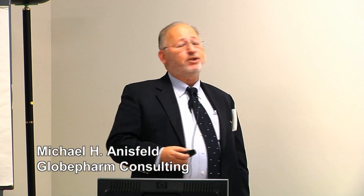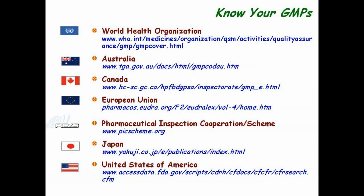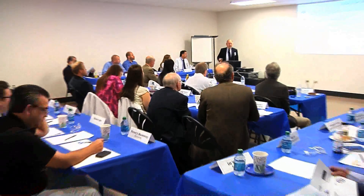Some global GMP thoughts for you. I've thrown out a lot of references — those are the websites where you can get them. They're all in English and they're all free, except for Japan where the official publication is in Japanese. If you want the English version, the official translator and publisher is Yakuji Nippo Company. They will charge you about $100 for every document you want, and they will deliver within three days.